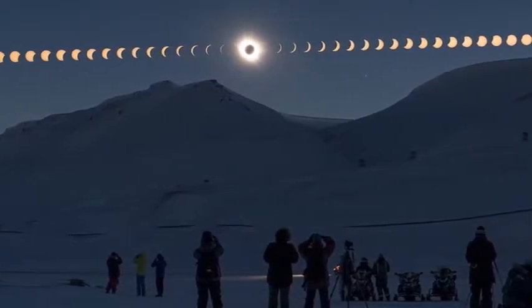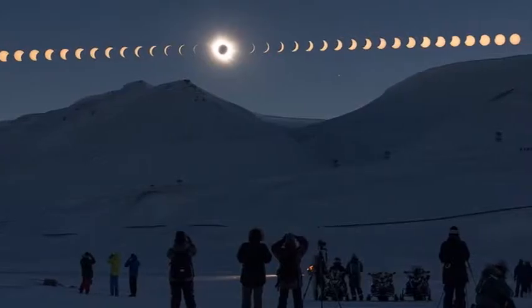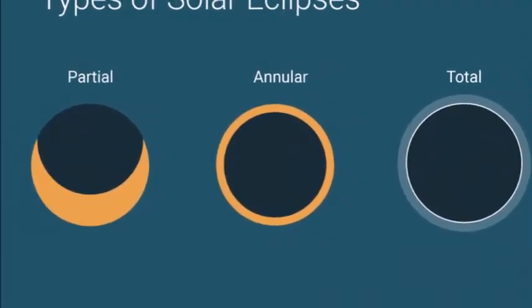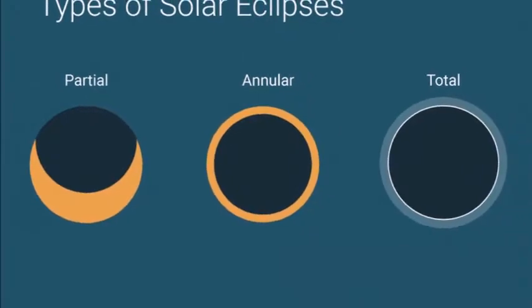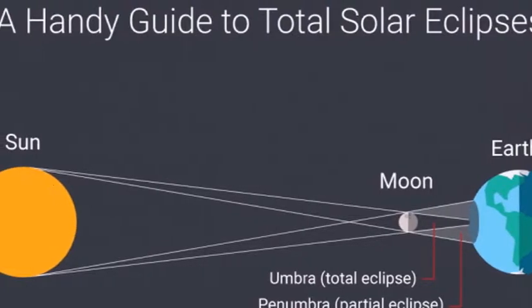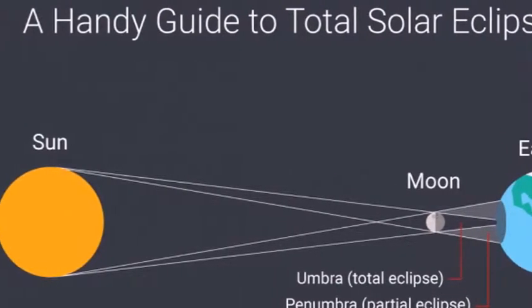That's why during a partial eclipse, and even through the early and later phases of a total eclipse, when you can see the last bits of sun peeking through the craters of the moon, you'll need eye protection. You can only take off the protective glasses when the moon has completely covered the sun during totality.